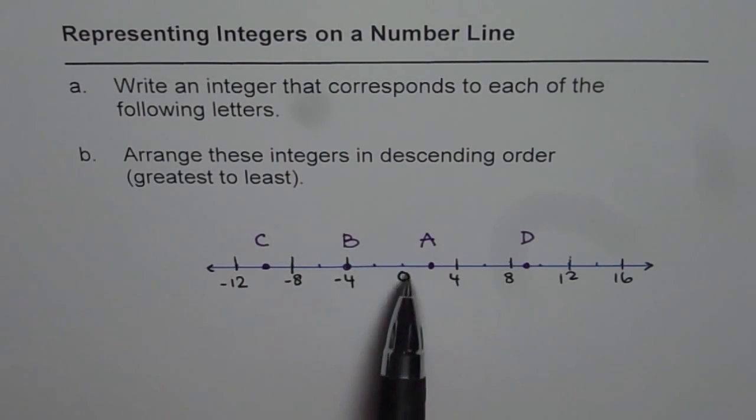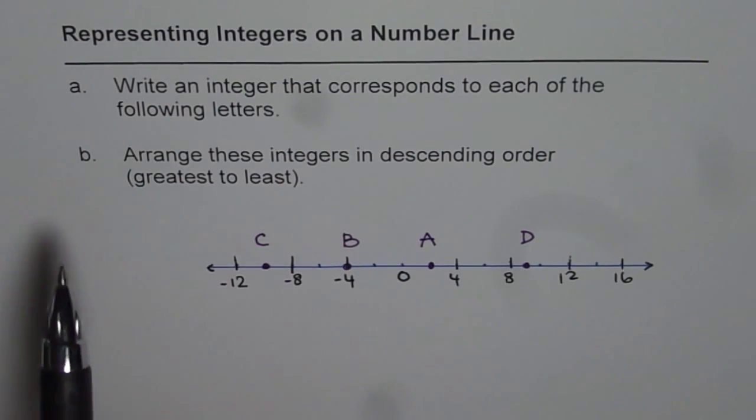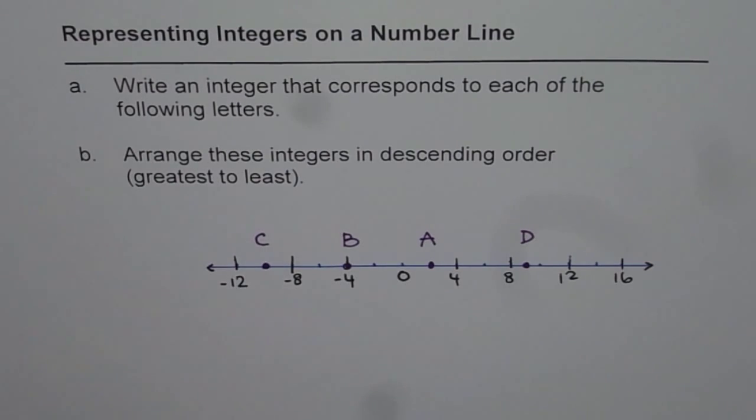Remember, integers to the right side of 0 are positive and left of 0 are negative. Part b is arrange these integers in descending order. Descending order means from greatest to least.